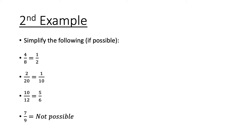More examples — simplify the following where possible: 4/8 equals 1/2 (divide top and bottom by 4); 2/20 — divide top and bottom by 2; 10/12 — divide top and bottom by 2 to get 5/6. However, 7/9 cannot be simplified because 7 and 9 have no common factors. Not all fractions can be simplified, which is why the question says 'if possible.'